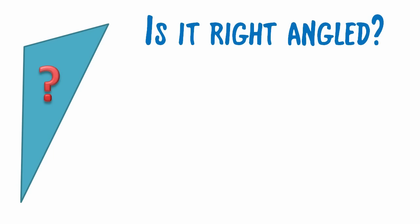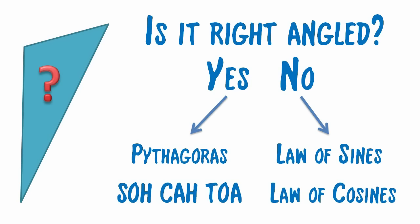So let's say you have some mystery triangle, you've got to try and figure something out to do with it. Maybe you're trying to find an angle, maybe you're trying to find a side. The first thing you need to ask yourself is, is it right angled? If yes, then you might want to look at using either Pythagoras or SOHCAHTOA to help you find whatever it is that you're trying to find.